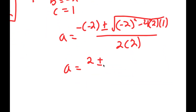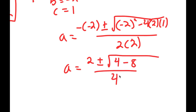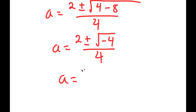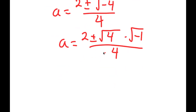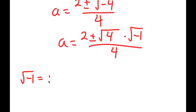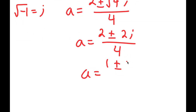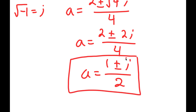This equals positive 2 plus or minus the square root of 4 minus 8 over 4, which equals 2 plus or minus the square root of negative 4 over 4. The square root of negative 4 I can rewrite as the square root of 4 times the square root of negative 1. The square root of negative 1 is equal to the imaginary number i. So I get a equals 2 plus or minus the square root of 4 times i over 4, and since the square root of 4 is 2, I get a equals 2 plus or minus 2i over 4, which simplifies to a equals 1 plus or minus i over 2. So these are two more solutions to my equation.